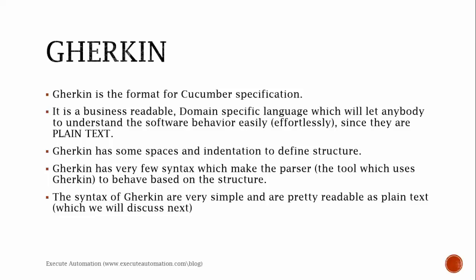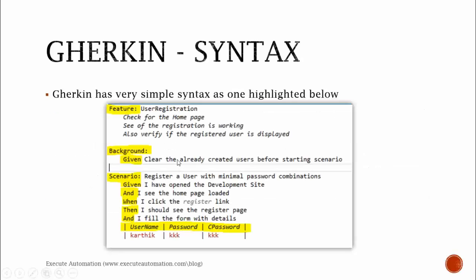Gherkin is actually a format for Cucumber specification. Basically it is a language specification for BDD. Gherkin is a business-readable, domain-specific language which lets anybody understand the software behavior very easily and effortlessly. Since it is plain text, Gherkin has spaces and indentation to define structures, with very few syntax elements that make the parser behave based on those structures. Gherkin will not have looping code like for or for-each loops, condition statements like if, or import statements to import a library.